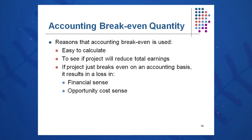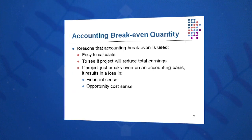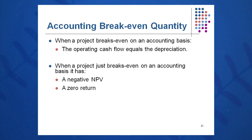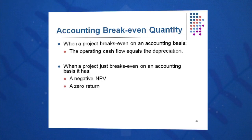OCF at the accounting breakeven, which we just proved, is equal to depreciation. This is very easy to calculate, very popular and useful — you'll see this used heavily when you go to work. This is a project that just breaks even on an accounting basis, resulting in a loss in a financial sense and in an opportunity cost sense. When a project breaks even on an accounting basis, OCF equals D, and it will give you a negative NPV and a zero return on investment.